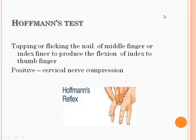Hoffman's test: hold the patient's index or middle finger and tap over the nail. If it produces flexion of the thumb finger, it is a positive Hoffman's test — it indicates cervical nerve compression. If the thumb finger is not flexed, it is a negative Hoffman's test, meaning there is no cervical nerve compression.